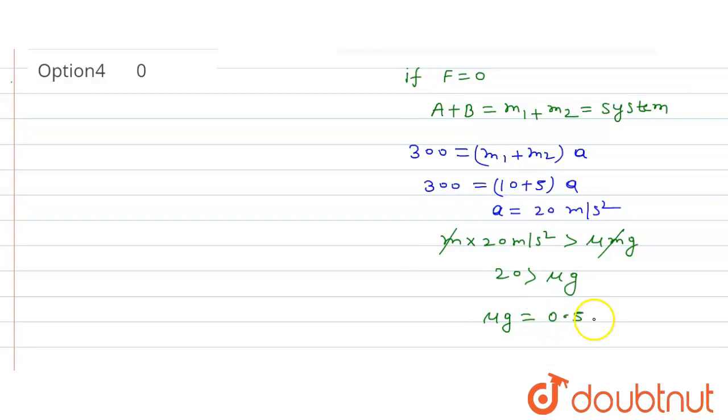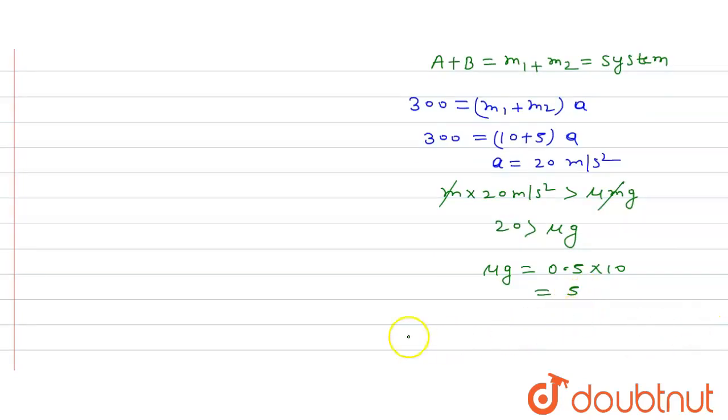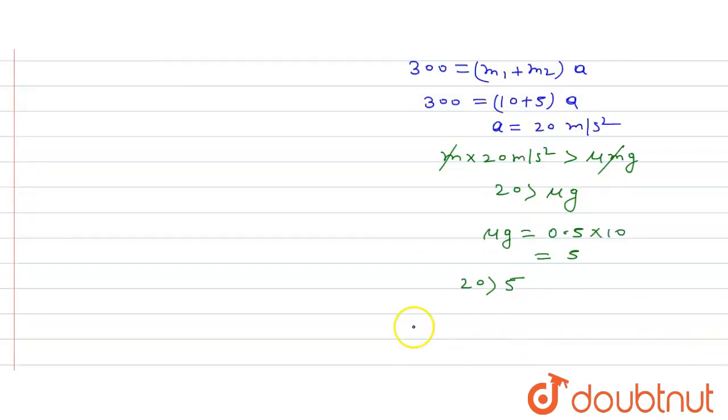From here, 20 is greater than 5. So already relative motion exists.